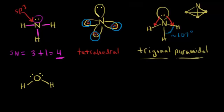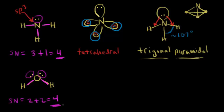Let's do water. First we calculate the steric number: it equals the number of sigma bonds — one, two — so two sigma bonds, plus the number of lone pairs of electrons. There's a lone pair here and a lone pair here, so two plus two equals four. We need four hybridized orbitals. When you need four hybridized orbitals, that's an sp3 hybridization situation — so this oxygen is sp3 hybridized.